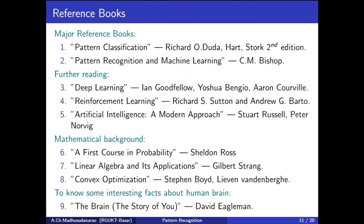These are the major reference books we are going to follow for our pattern recognition course. The major reference book is Pattern Classification by Duda and Hart, second edition. This is the book we are going to follow throughout our course. The second major reference book is Pattern Recognition and Machine Learning by Christopher M. Bishop.